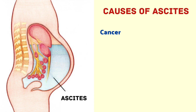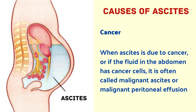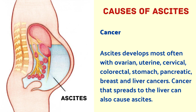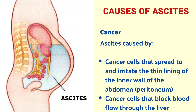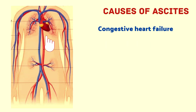The next cause is cancer. When ascites is due to cancer, or if the fluid in the abdomen contains cancer cells, it is often called malignant ascites or malignant peritoneal effusion. Ascites develops most often with ovarian, uterine, cervical, colorectal, stomach, pancreatic, breast, and liver cancers. Cancer that has spread to the liver can also cause ascites, as cancer cells spread to and irritate the thin lining of the inner wall of the abdomen called the peritoneum, or block blood flow through the liver.